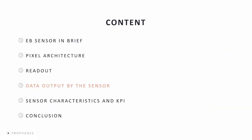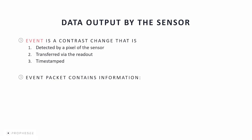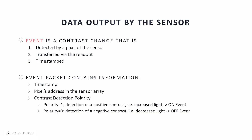The Prophecy sensor outputs events, also called CD events, which are the contrast changes detected by the pixel, transferred via the readout, and timestamped. Each event packet contains: the timestamp, the pixel's address in the sensor array, and the contrast detection polarity. A polarity of 1 corresponds to detection of positive contrast or increase in light — an on event. A polarity of 0 corresponds to detection of negative contrast or decrease in light — an off event.